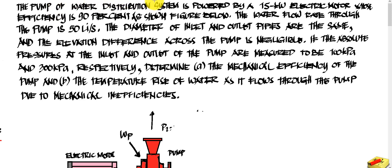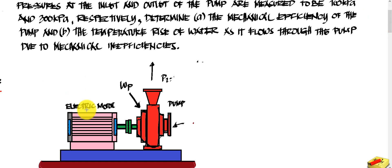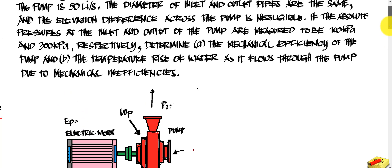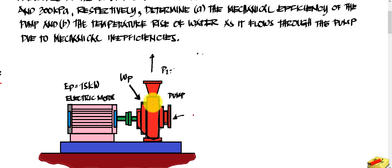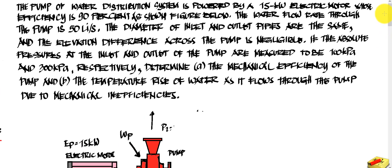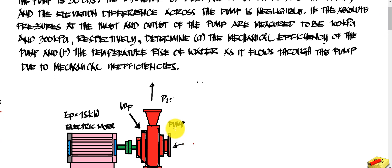A water distribution system is powered by a 15 kilowatt electric motor whose efficiency is 90%. So we have the electrical power EP which is 15 kilowatt at 90% efficiency. We have the electric motor connected to the pump, and the volume flow rate through the pump is 50 liters per second.